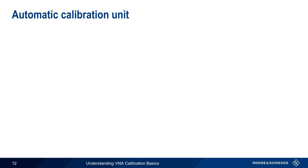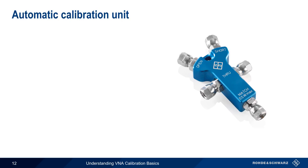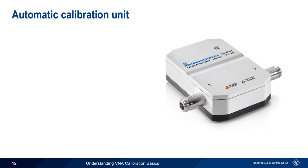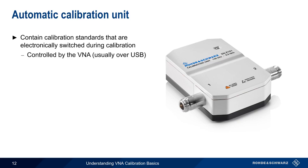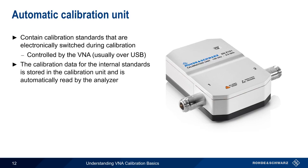Often, calibration standards come as either discrete components or in the form of a calibration T, which combines the four most common standards – through, open, short, and match. In this case, calibration standards are manually connected and disconnected at the appropriate points in the calibration routine. An increasingly popular alternative to this is an automatic calibration kit, or AutoCal. These units contain the same calibration standards – through, open, short, and match – but they are automatically switched in and out at the proper point in the calibration routine. The AutoCal unit is controlled by the VNA, usually over USB. Calibration data for these internal standards is stored within the AutoCal unit itself and therefore can be automatically read and used by the analyzer.